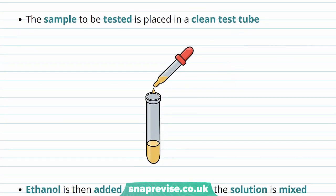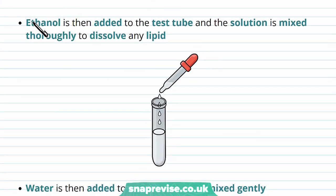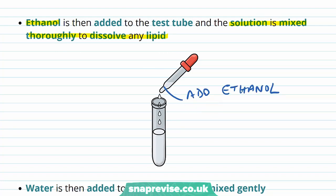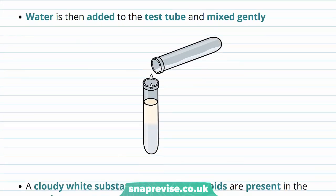First of all, we place the sample into a clean test tube using a pipette. Then we add the particular alcohol known as ethanol, and the solution is mixed thoroughly to dissolve any lipid present. We stir and mix it so that any lipids that are present get dissolved within the ethanol.